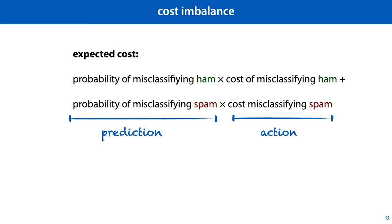Cost imbalance is not a property of a classifier in isolation; it's a property of a classifier inside a larger system that takes actions. The cost imbalance for a system that deletes spam is very different from the cost imbalance for a system that moves spam to a junk folder. And here we should always be on the lookout for creative solutions in how we use our predictions — moving spam to a junk folder instead of deleting it, showing users multiple translations instead of just one. Very often, the best ways of minimizing cost don't come from improving the model performance, but from rethinking the system around it.